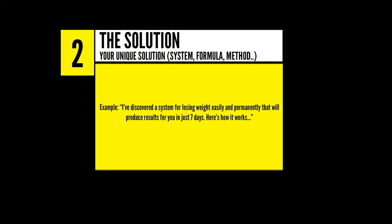Number 2: the solution you're offering. This is your unique solution, because every single online course has a unique solution which the instructor came up with to solve the student's problem. This is your system, your method, your formula. The way you would transition into your solution is to say something along the lines of: I've discovered a system for losing weight easily and permanently that will produce results for you in just 7 days. Here's how it works. Then you introduce your solution. The trick here is to not get into too much detail — they get the details after they buy the course, not before.